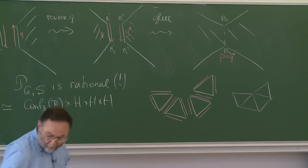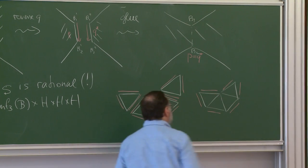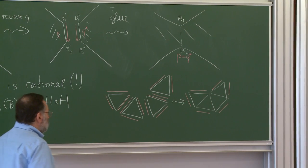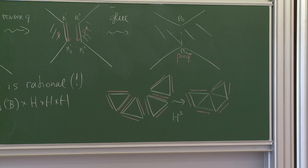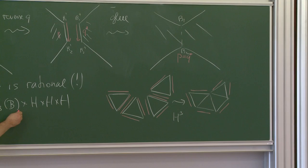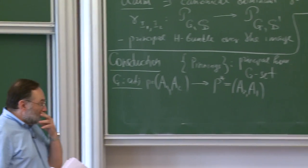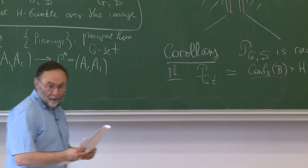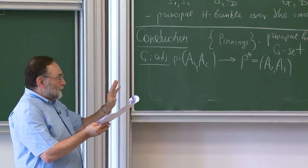After gluing all the triangles, you end up with something that still has pinnings on the outside, but inside all the pinnings are gone. The result is a fibration with fiber H cubed. Because of the construction, it evidently produces a rational structure. So it's enough to have a rational structure on the triangle to inherit the rational structure of the whole thing.